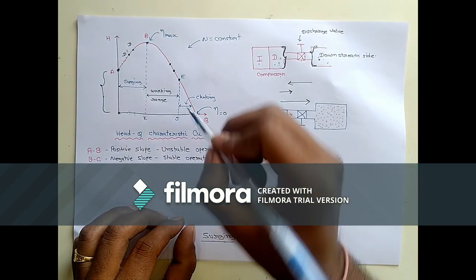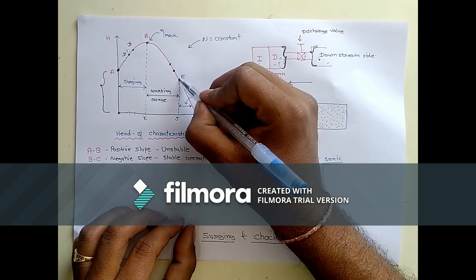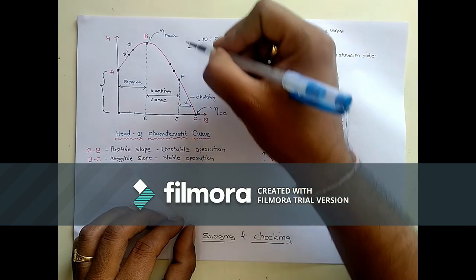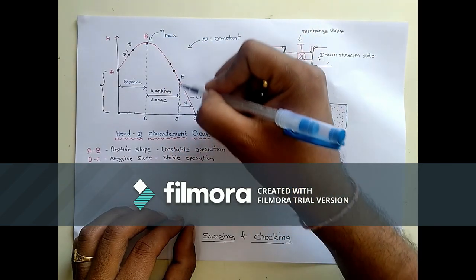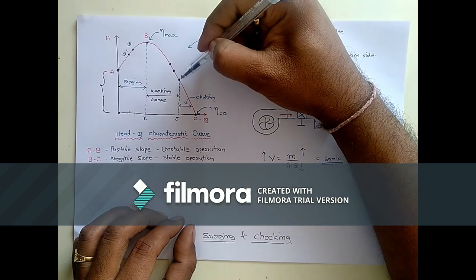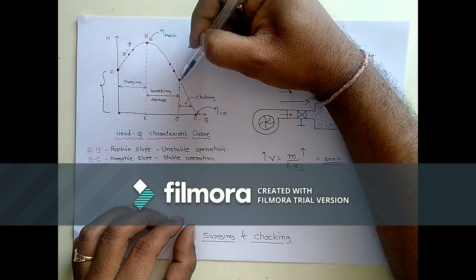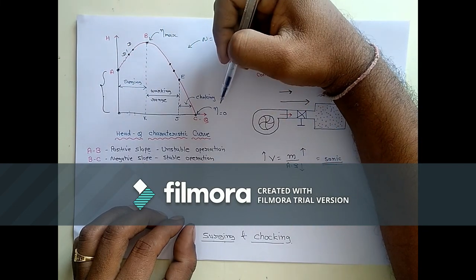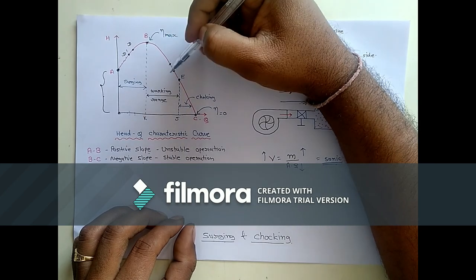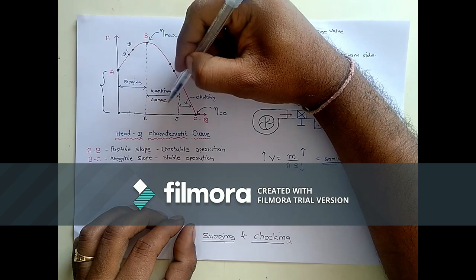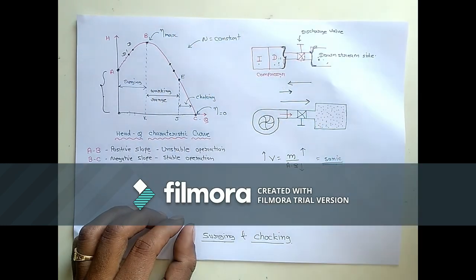Discharge will not increase further even after fully closing the discharge valve. That is known as the choking point in the case of a compressor. So compressors are always designed between points B and E. Beyond B towards A there is a surging phenomena, and after point E the choking phenomena will occur. So B to E is the working range of the compressor.